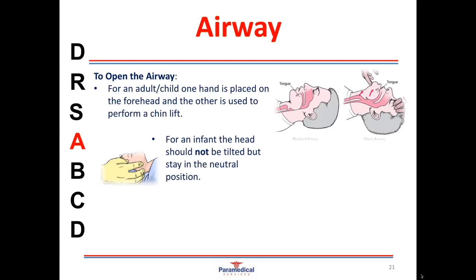Things are different for infants — their heads are very large compared to their bodies, so when lying flat on their back the head naturally tilts into the sniffing position we aim for with a head tilt chin lift on adults. So all we need to do is ensure an infant is lying flat on their back and their airway will naturally open. For children between infant and adult size, a slight head tilt may be needed depending on body size — a very small two or three year old needs a very gentle tilt, while a 14-year-old needs a more exaggerated tilt.